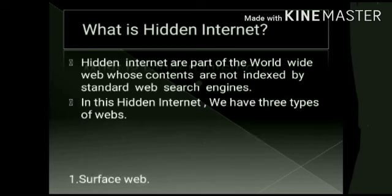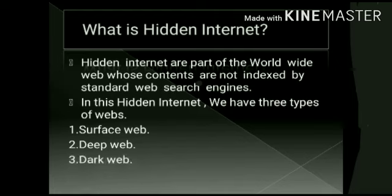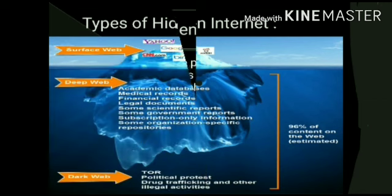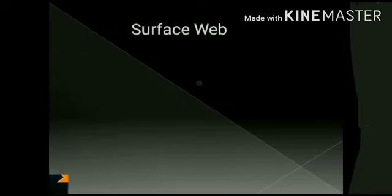We will get into the search information. There are many other webs. There are 3 types of internet: first, Surface Web; next, Deep Web; and Dark Web. Let's look at these three types of internet.